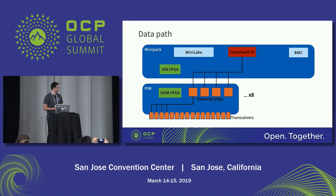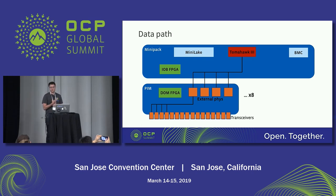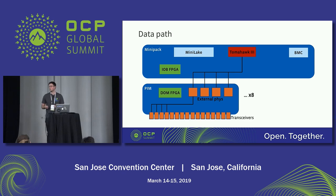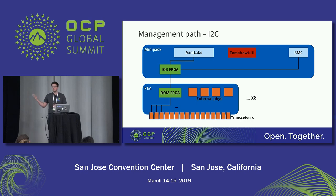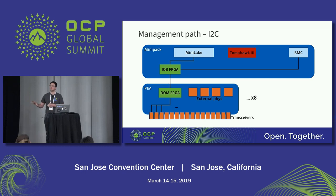The end state we want is that 25-gig NRZ data comes in through the transceivers, hits the external PHYs, gets translated to 50-gig PAM4, and hits the internal PHYs of the Tomahawk 3. However, in order to program these devices, we first need to be able to communicate with them. For transceivers, the onboard protocol is I2C, and our transceiver management and monitoring software all runs on our Minilake microserver. Historically we communicated with transceivers through a USB-to-I2C bridge chip, but one I2C bus to 128 optics was not going to cut it.